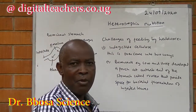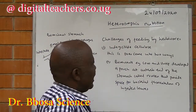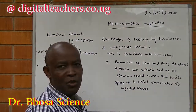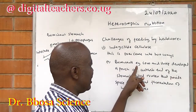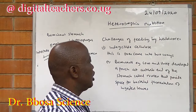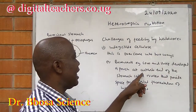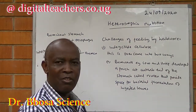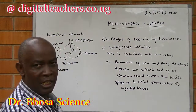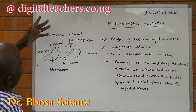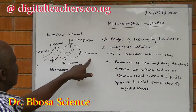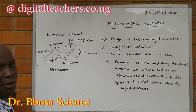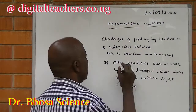Challenges of feeding by herbivores. One, indigestible cellulose. This is overcome in two ways. First, ruminants — for example, cow, goat, sheep — have developed a pouch at the anterior end of the stomach called the rumen. This provides space for bacterial fermentation of ingested leaves. The ruminant stomach has four pouches: the rumen, reticulum, omasum, and abomasum, before you reach the intestine.